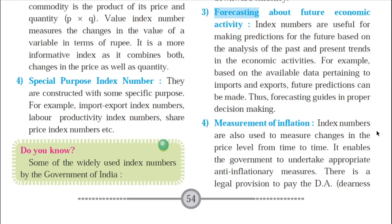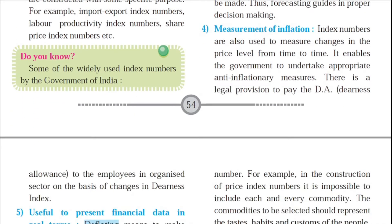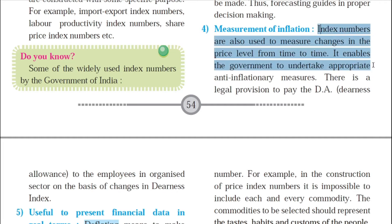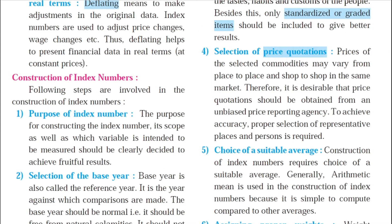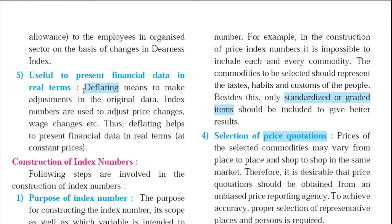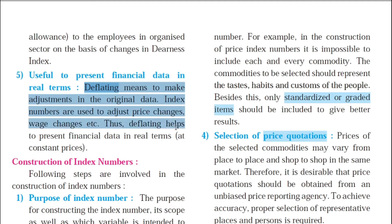Index numbers also play a very important role in measuring inflation. They are used to measure changes in the price level from time to time, enabling the government to undertake appropriate anti-inflationary measures. The inflation measures taken to stop inflation are based on index number analysis. Index numbers are also used for deflating — making adjustments in original data — to adjust price changes and wage changes, thus presenting financial data in real terms at constant prices.